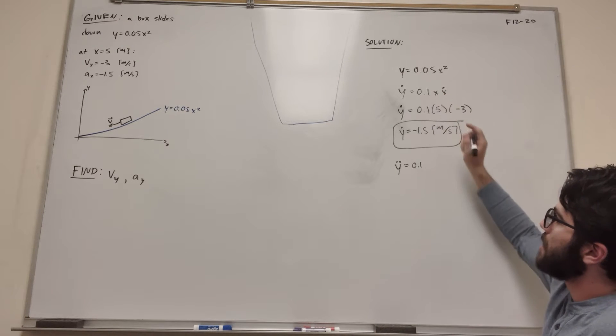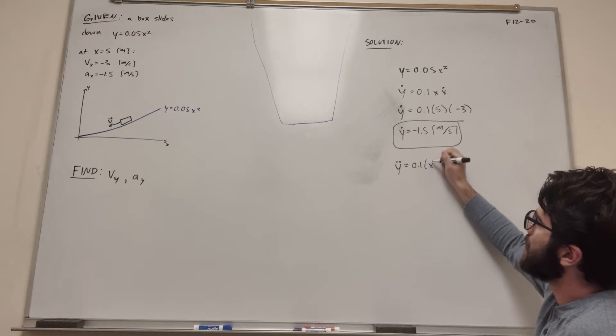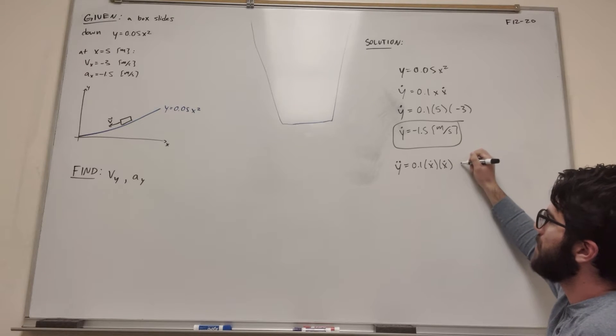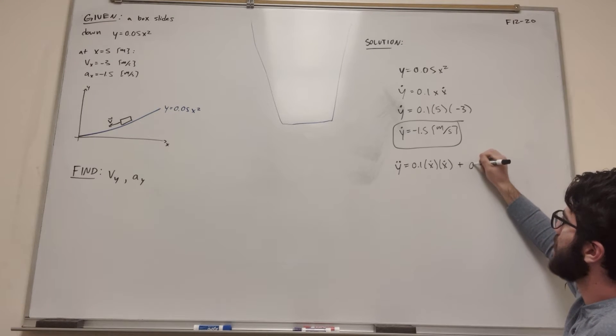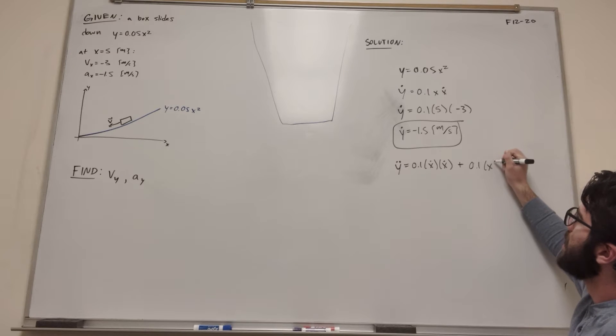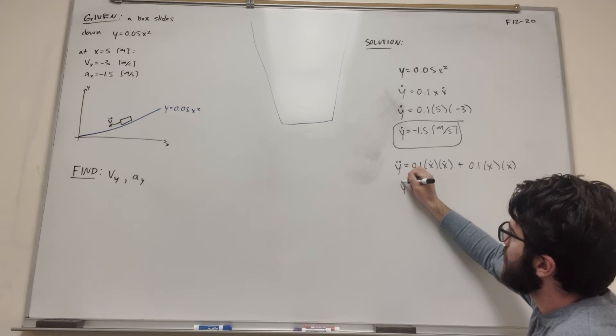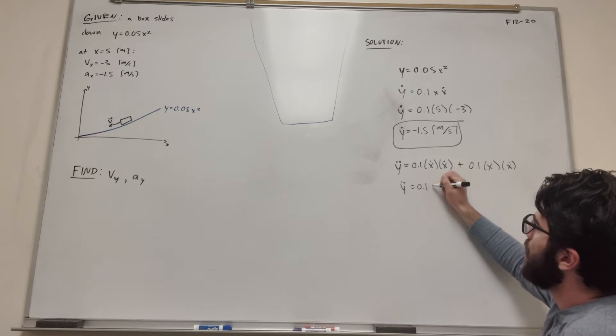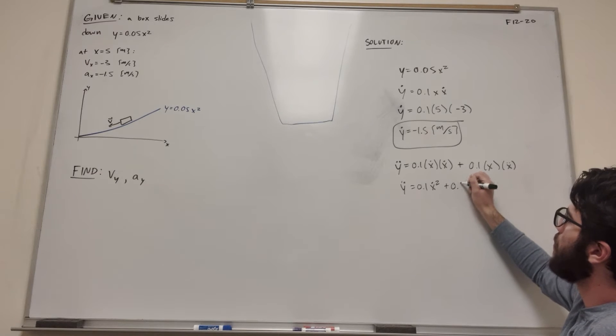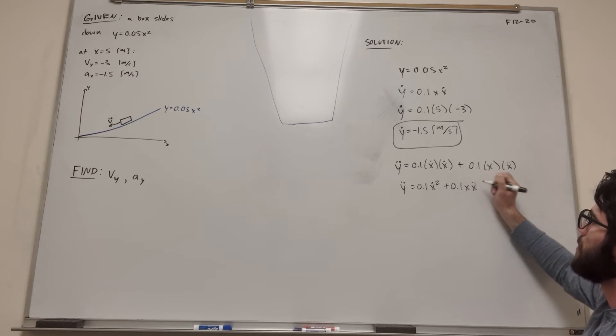So let's start with the x. This is going to become, x is going to become x dot. Then we still have this x dot that we don't take the derivative of. Then we have to add the other side of the product rule, so 0.1. That x is going to stay, but then we're going to take x double dot. So this is going to be simplified to 0.1 x dot squared plus 0.1 x x double dot.